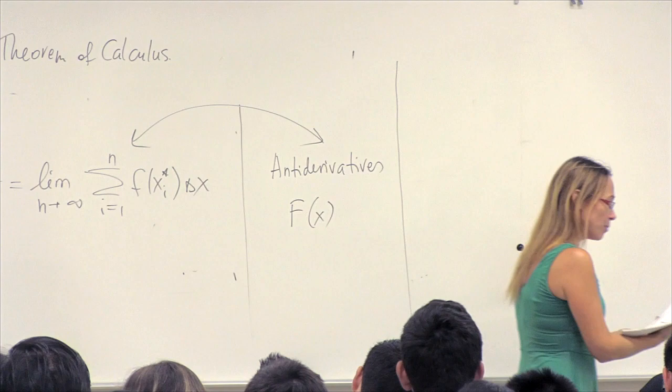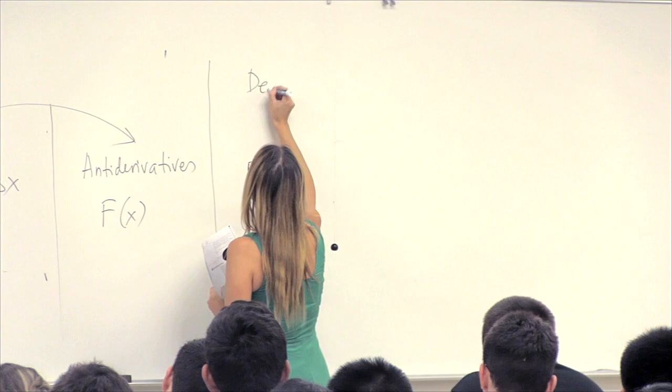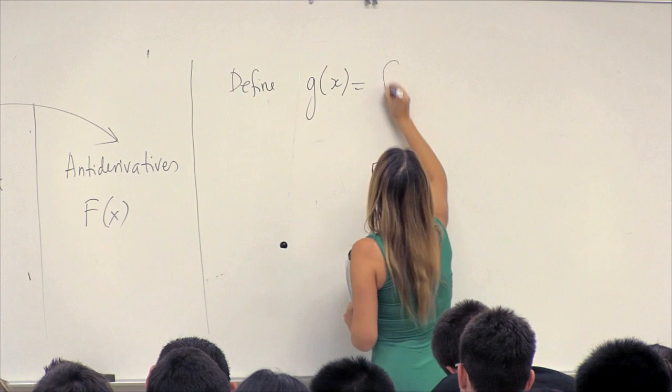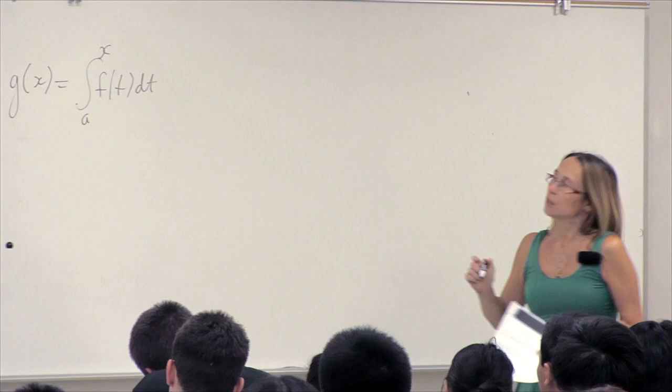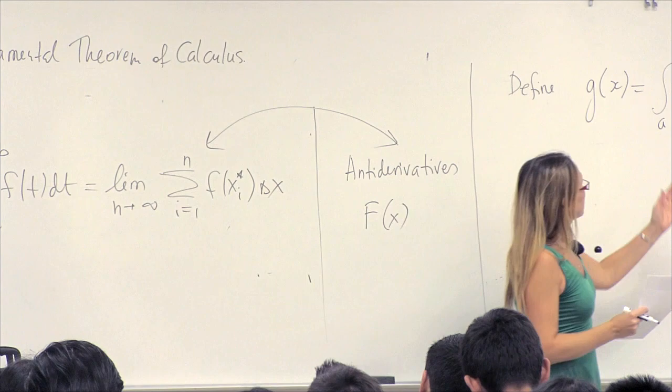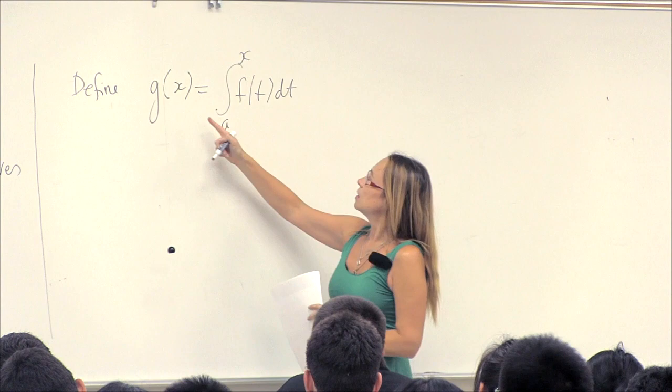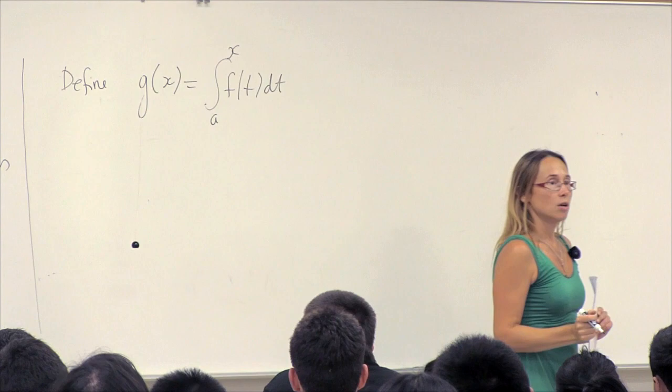To start with, I'm going to define a function g of x, that's equal to an integral from a to x of another function f. So f is a given function and we integrate between the limits a and x. This is slightly unusual because the argument of the function on the left coincides with the upper limit of integration on the right.